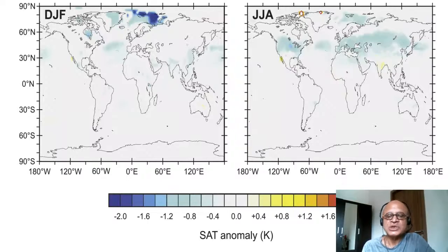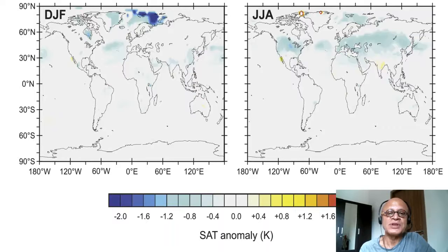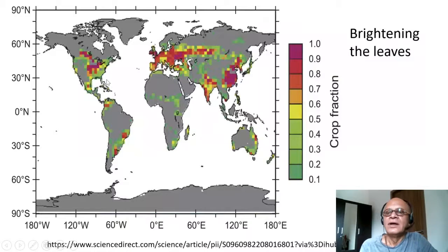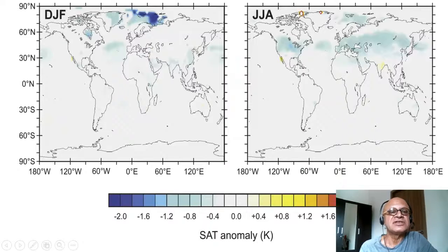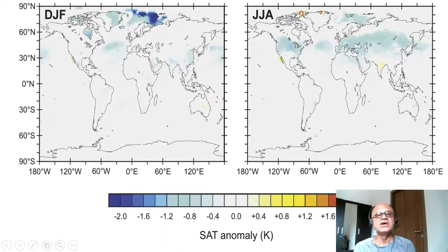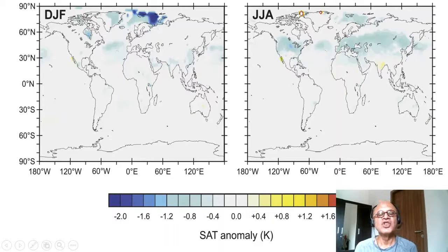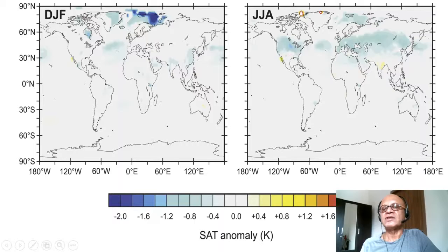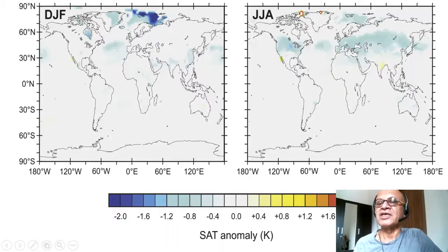This shows the change in surface air temperature as an anomaly from model experiments done by changing the albedo properties of crop fractions. In December–January–February there is slight cooling in some areas and a large cooling in the Arctic Circle and over Greenland — a non-local impact of changing vegetation albedo. In the summer months there are some spots showing warming, which you don't want in the Arctic or over Greenland or India.